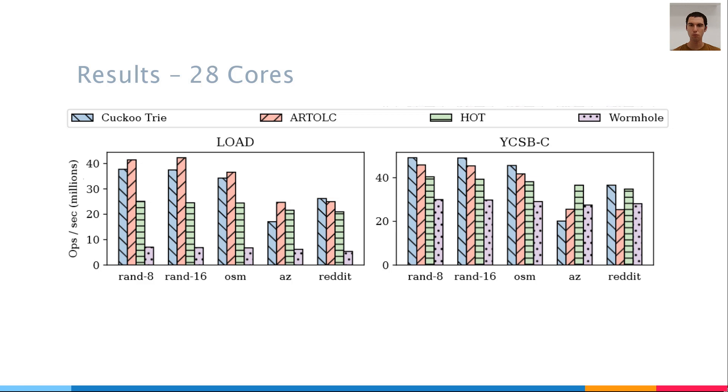The only dataset where this is not true is dataset AZ. This is a dataset of Amazon product reviews, and its keys share long common prefixes. For example, these two keys share a prefix of 18 bytes. This makes the trie for this dataset very deep, so even though the cuckoo trie reads a few nodes in parallel, it still has to traverse a long path in the trie until it reaches a leaf.